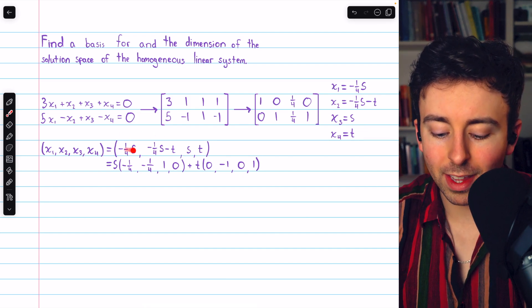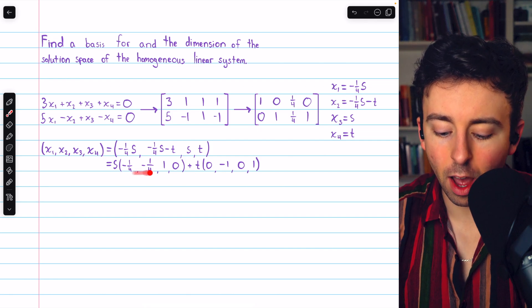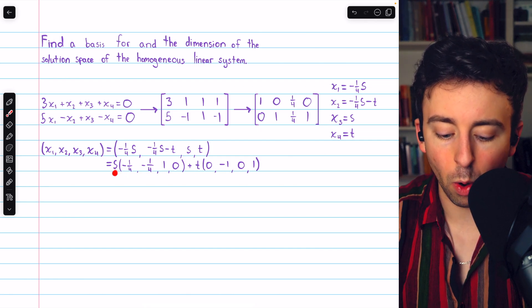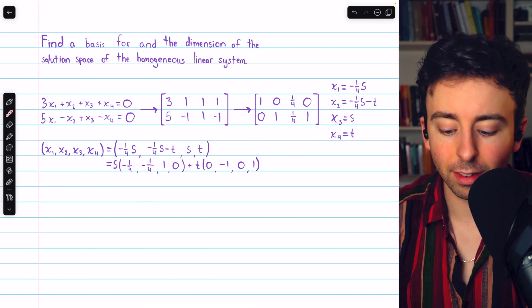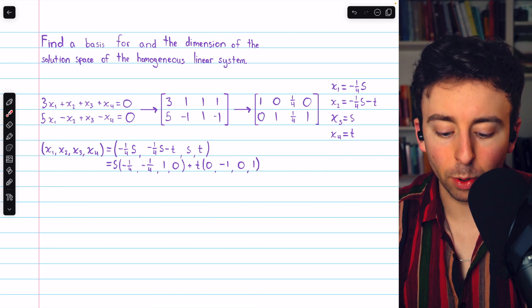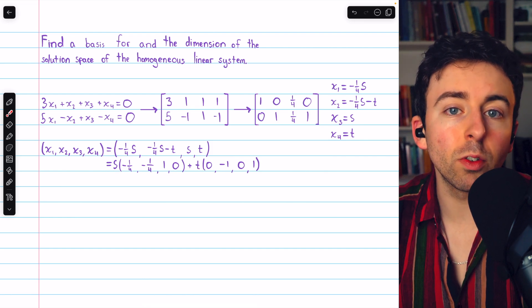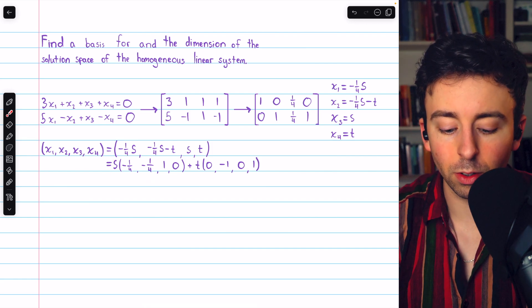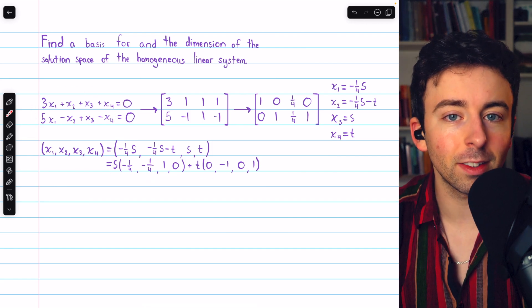We can then write this single vector as a sum of two vectors. This vector captures the coefficients of the parameter s, and this vector captures the coefficients of the parameter t. By letting the parameters s and t range over all real numbers, we would describe all solutions to this homogeneous linear system.